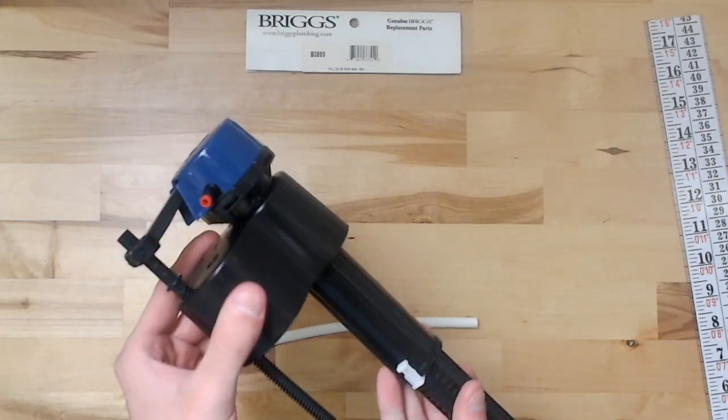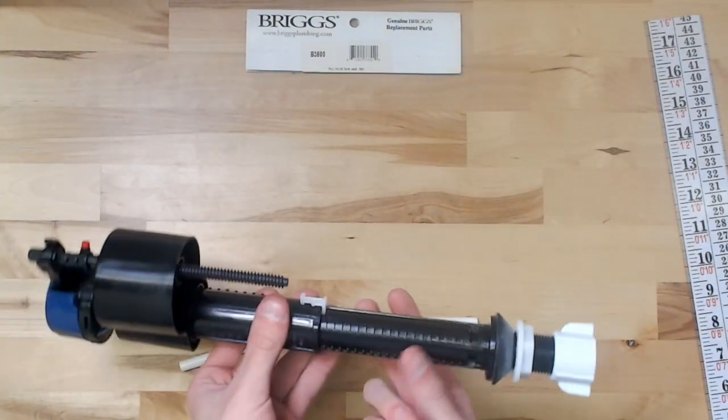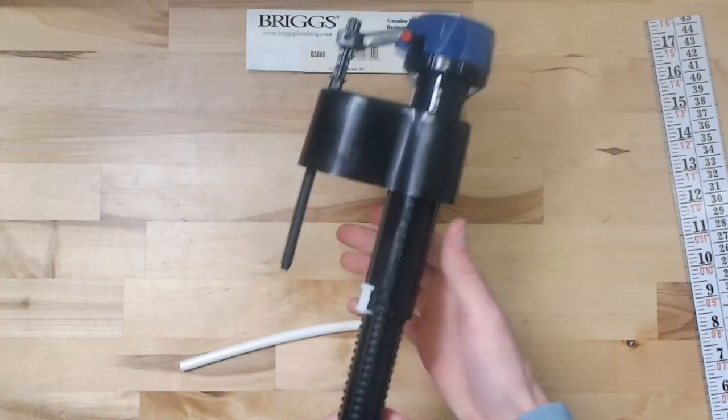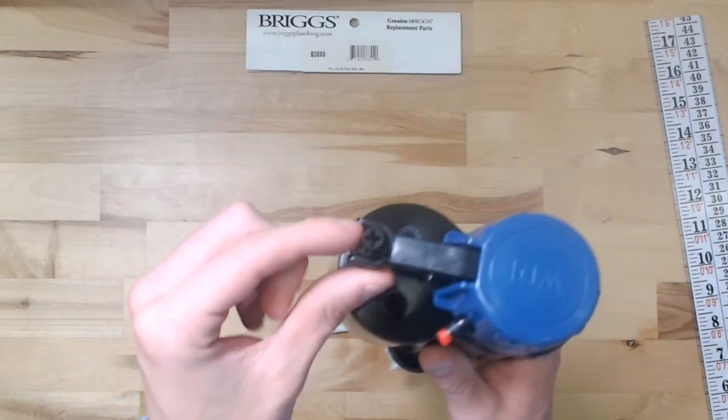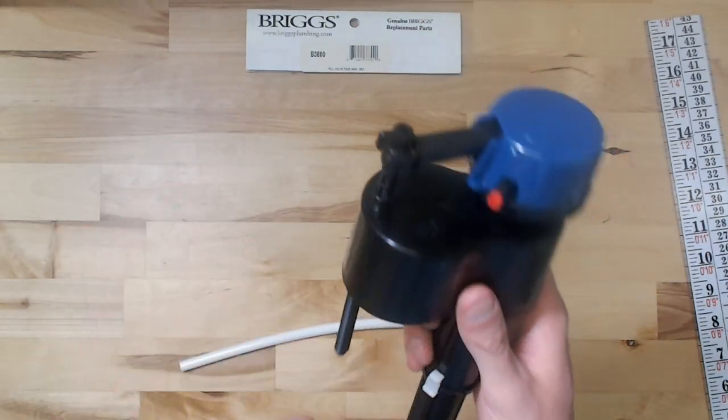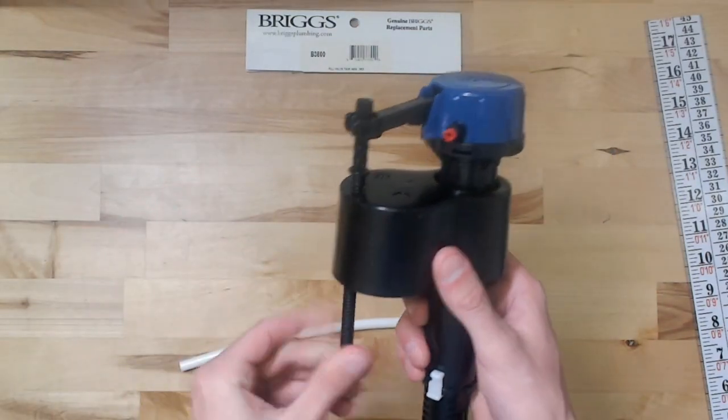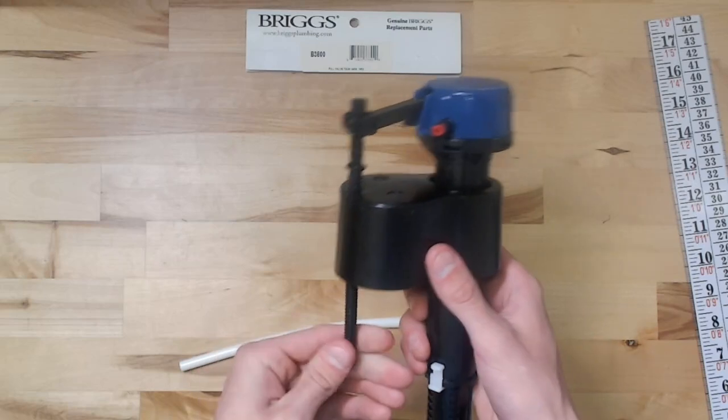The float is adjustable along with the valve itself. There's a little clip right here - pop it and adjust it. You just put a screwdriver in there, turn that, and it can lift or lower the float.